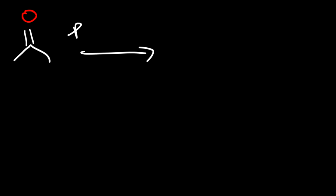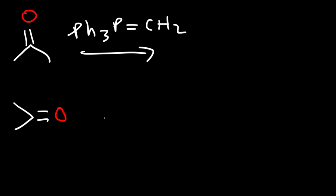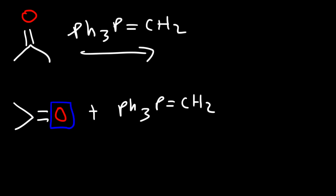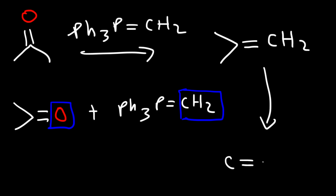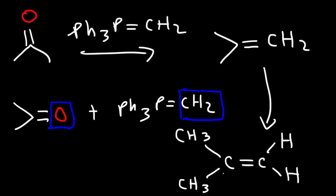In this video we're going to go over the Wittig reaction. Here we have a ketone and we are going to react it with a phosphonium ilid. The Wittig reaction converts ketones into alkenes. Rotate the ketone so the carbonyl group faces the CH₂ group, then replace the oxygen with the CH₂ group — or whatever is attached to that double bond. The Wittig reaction is very useful for making alkenes from ketones.